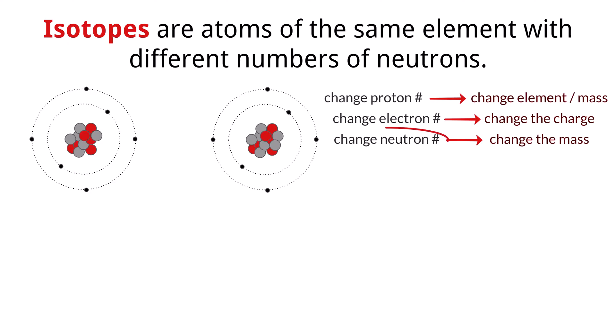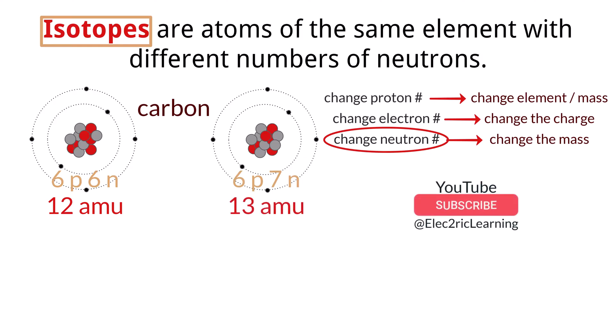Different versions of atoms of the same element that have different numbers of neutrons are called isotopes. This results in different atoms of the same element having a different mass number. Take carbon again as an example. If this carbon atom has 6 protons and 6 neutrons, it would have a relative mass number of 12. But if another carbon atom had 6 protons and 7 neutrons, it would have a relative mass number of 13. These are two different isotopes of carbon, and the proper notation to write these isotopes out is using a hyphen followed by the mass number. So this would be carbon-12 and this would be carbon-13.